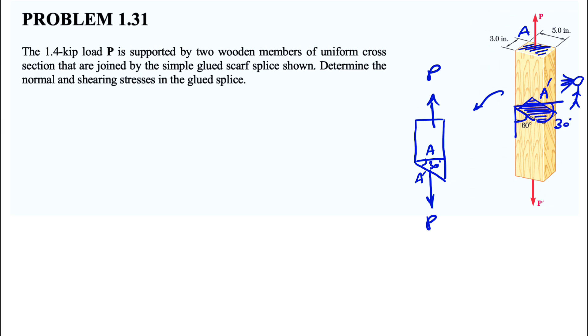So the reason we found this is that we can find A prime based on A because it's easy enough to find the area of A, which is basically three times five. We have this rectangle here. So three times five, which is going to be 15 inches squared.